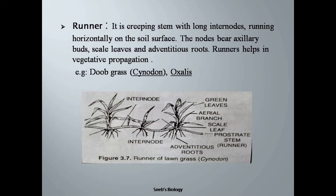The connection between these plants is pretty strong. If you try to pull one plant, two or three other plants are also pulled along with it. For example, Cynodon (that is doob grass) and Oxalis, etc.